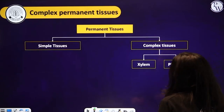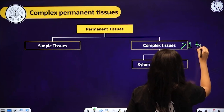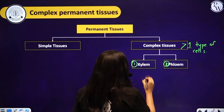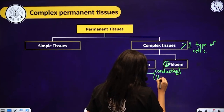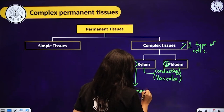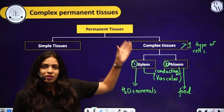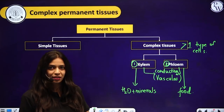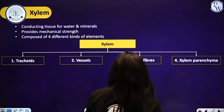Now let's move on and talk about complex permanent tissues. Complex permanent tissues have cells of more than one type. There are two types: xylem and phloem. Both of them are involved in conduction and are vascular tissues. Xylem is involved in the conduction of water and minerals, whereas phloem is involved in the conduction of food across different parts of the plant. Both have four types of cells each.